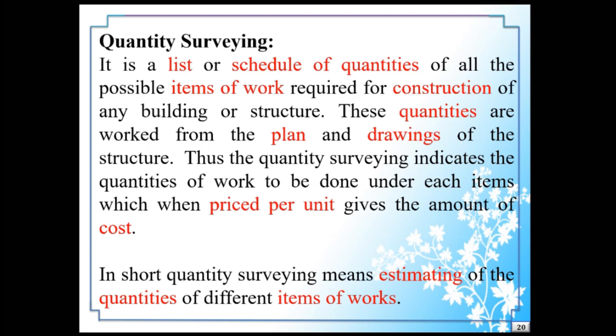Similarly, brick work, concrete work, reinforcement work, wood work, plaster work, painting work — all items required to construct a building or structure are listed. We add a list or schedule of quantities, and when we multiply the quantity of items by the unit price, we get the total cost of items of work. In short, quantity surveying means estimating of quantities of different items of work.